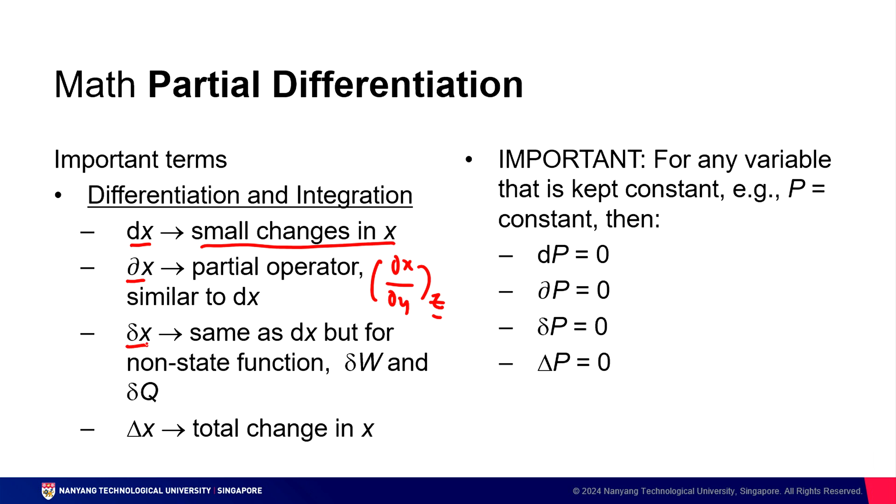This over here is the lowercase delta. That's delta X. It is exactly the same as DX above, but it's for something known as a non-state function, something that we will discuss slightly later in this course. In this case, the two non-state functions are delta W and delta Q. Very importantly, the uppercase delta. Delta X stands for a total change in X. That means that it expresses the total change of all the small, large, and partial changes in your expression.